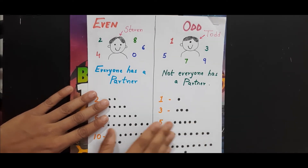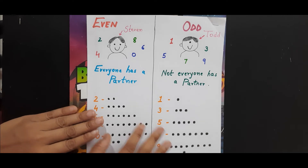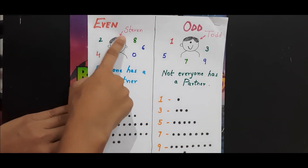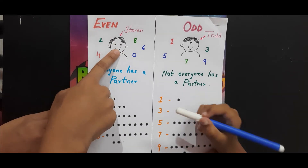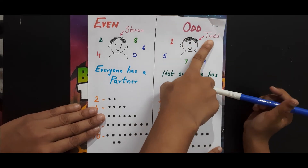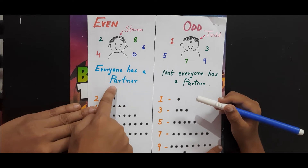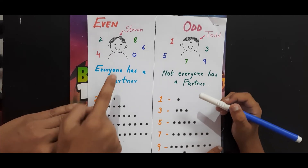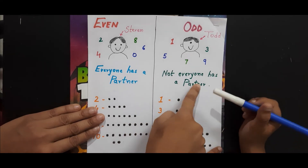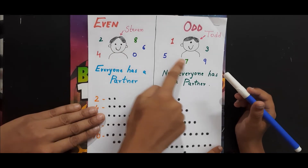Once the kid learns the practical way and understands the concept of even and odd, we move to the written way — that makes the kid learn the concept in an even easier way. So here I have drawn an even side and an odd side. On the even side I have made a boy whose name is Steven, and on the odd side there is a boy whose name is Todd. Steven says that everyone who comes with him has a partner, but Todd says that whoever comes with him, not everyone has a partner.